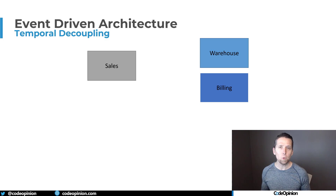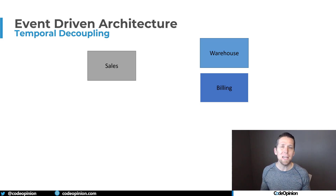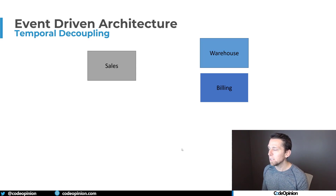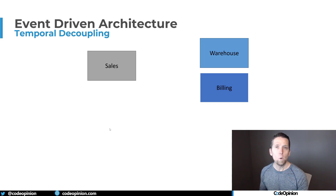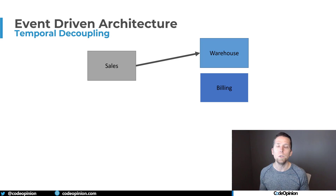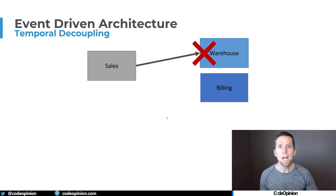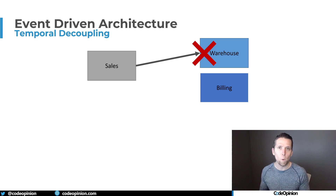For the last example, I want to talk about temporal coupling and internal integration between services within your own system. We're often used to synchronous request-response between different services — HTTP calls or gRPC — which are blocking and temporally coupled. When sales had an order placed, it needed to call billing to charge the customer, then subsequently call the warehouse to create a shipping label and allocate products. If that warehouse call fails, we've made all these calls sequentially and now need compensating actions — going back to billing to cancel the invoice or refund the order because we can't fulfill from the warehouse. All this happens because of temporal coupling with no isolation.